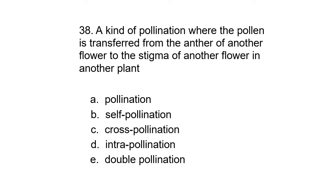Question 38. A kind of pollination where the pollen is transferred from the anther of one flower to the stigma of another flower in another plant. A. Pollination, B. Self-pollination, C. Cross-pollination, D. Intra-pollination, or E. Double-pollination. The correct answer is C. Cross-pollination.